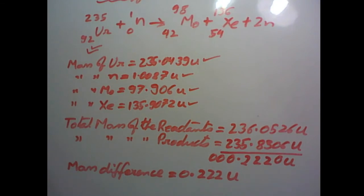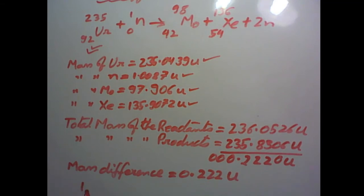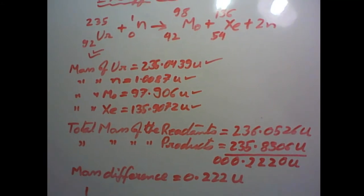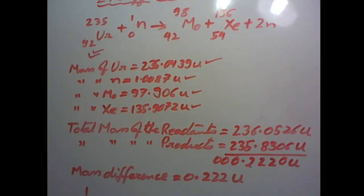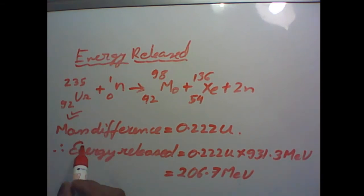We know that 1 U of mass when converted into energy gives us 931.3 MeV of energy. In this reaction, the mass difference is around 0.222 U, and this amount of mass is converted into energy and released in the process.